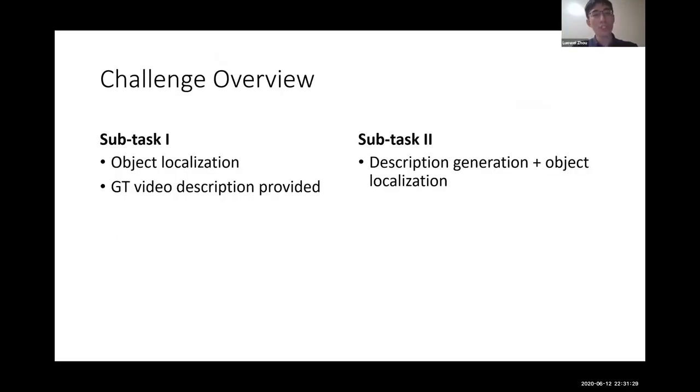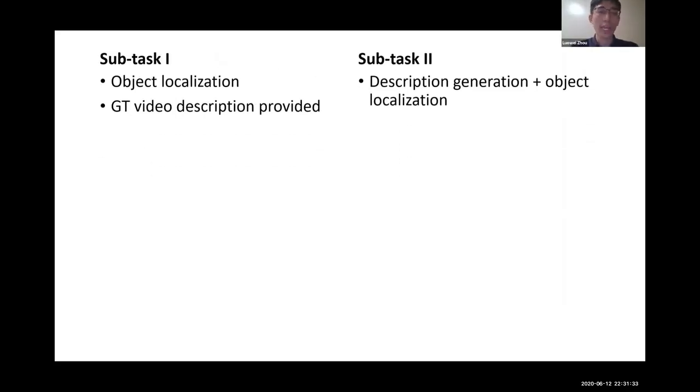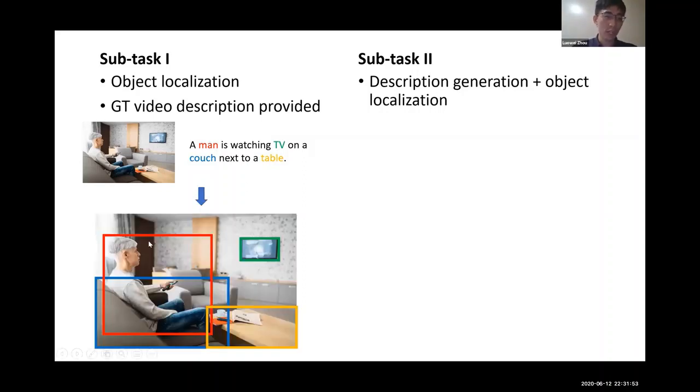So the challenge has two subtasks. Subtask 1 aims to locate objects determined by a caption in the video. So the input will be a video and associated caption. And in this caption, we have predefined a set of objects. So in our case, we have 432 target objects to localize. And example output of the system should look like this, with a bounding box drawn over the video and locating each of the target objects.